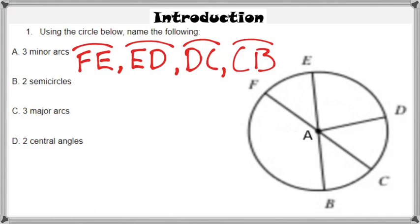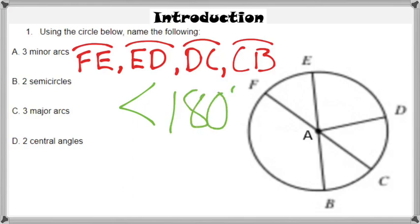In this picture right here, we have at least three minor arcs that we could name. Arc FE right there is a minor arc, as are ED, DC, and CB. Again, a minor arc is an arc that has a measurement that is less than 180 degrees.